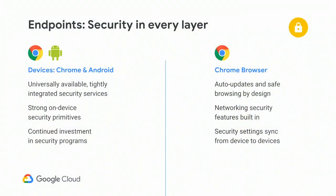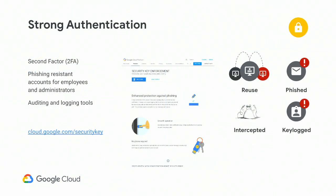Google on our end uses devices that are updated centrally — they auto-update and maintain strong security primitives on the device. We also make these devices and software available to our customers. When we talk about defense in depth, one of the easiest things an organization can do to secure their systems is have two-factor and multi-factor authentication in place. This helps prevent against phishing, adds an additional layer of auditing and logging, and reduces the attack surface.